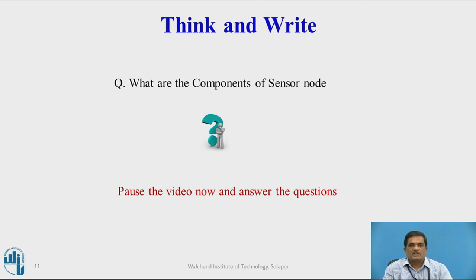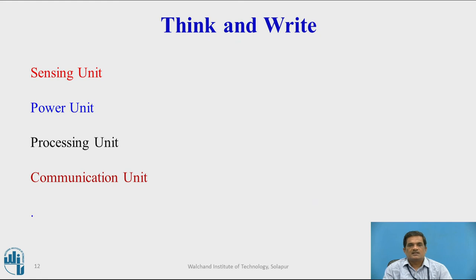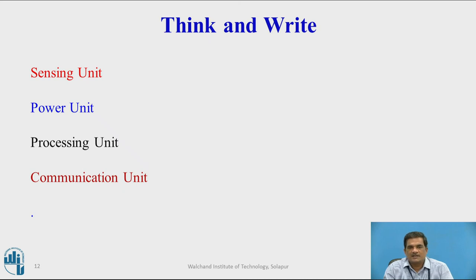Think and write: What are the components of a sensor node? Pause the video now and answer the question. The components of a sensor node are: the sensing unit, which senses information across the remote or sensing area; the power unit, which supplies power to all other units; the processing unit, which consists of a microcontroller and microprocessor for processing, analyzing, and storing data; and the communication unit, consisting of radio or communication links that enable the node to send information to the central system.